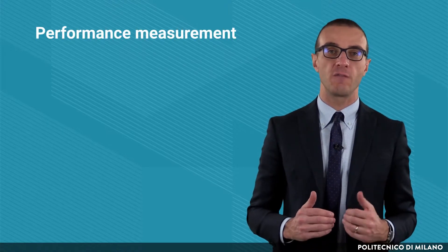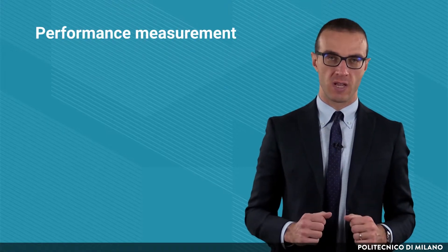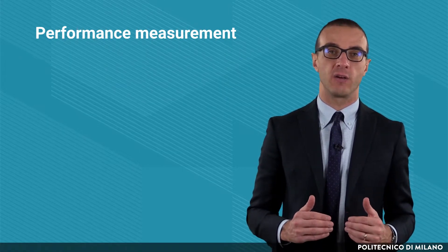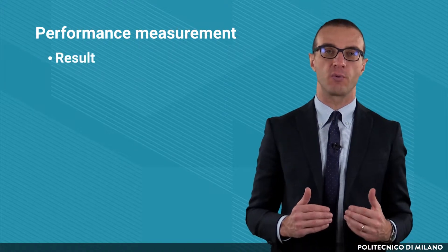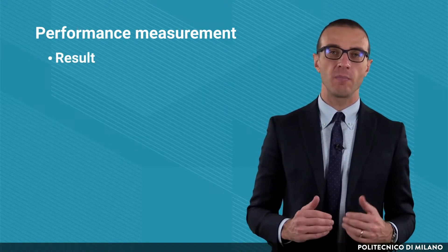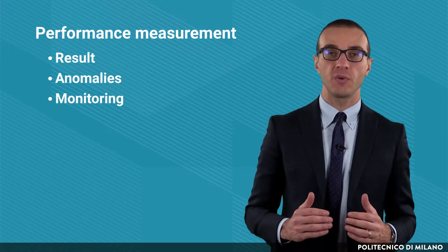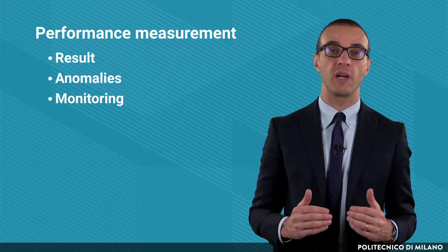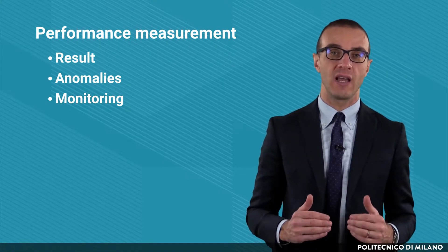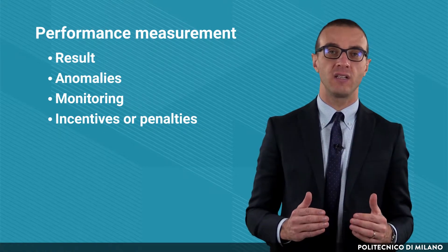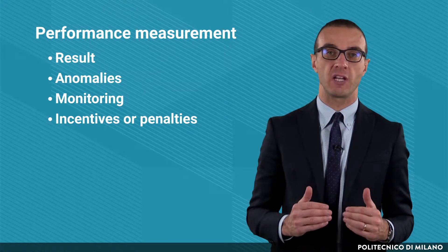In this lecture, we will see an overview of the main concepts related to the performance measurement of production and logistics systems. The main objectives of performance measurement are: quantifying in an objective way the results of company processes and activities, promptly identifying anomalies in order to correct them, monitoring the evolution of performances during time while comparing them to the customer's needs and to the objectives of the company, and providing incentives or penalties through the principles of management by objectives.